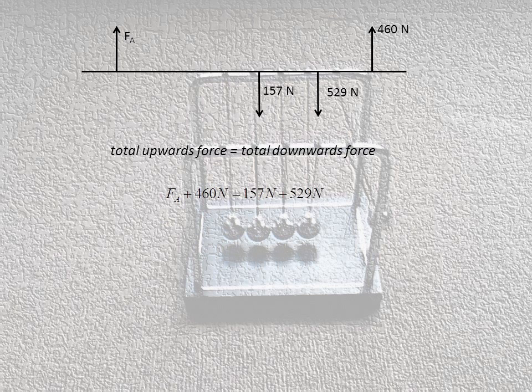So the upwards forces, force A plus force B, which is 460 newtons, equals the downwards forces, which is 157 plus 529. We've got that equation, all we need to do is solve now. We rearrange it here, so we've got force on one side, and solve for force A, and it's 226 newtons.